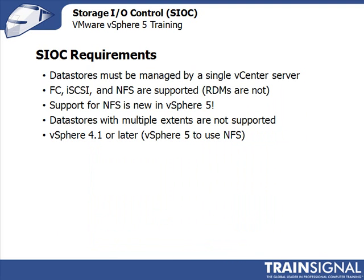What are the requirements to use Storage I.O. Control? First, the datastores must be managed by a single vCenter server, because the shares are stored in vCenter — it's vCenter that communicates the number of shares and specifies the amount of the storage array that those virtual machines across multiple ESXi servers, all accessing the same datastore, deserve. You can use either Fibre Channel, iSCSI, or NFS, which is brand new in vSphere 5. RDMs are not supported. Datastores with multiple extents are not supported. You need vSphere 4.1 or later to use Storage I.O. Control, and if you want to use NFS, you need vSphere 5 or later.